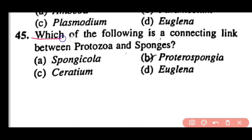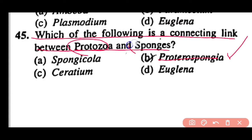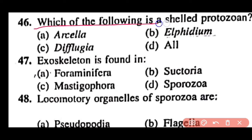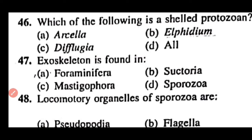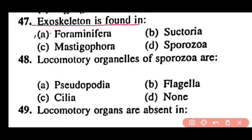Question 44: Which protozoan resembles the ancestral form from which plants and animals evolved — Amoeba, Paramecium, Plasmodium, or Euglena? Correct answer is option D. Euglena resembles the ancestral form from which plants and animals evolved. Question 45: Which is the connecting link between protozoa and sponges — Spongicola, Proterospongia, Serratia, or Euglena? Correct answer is option B. Proterospongia has characters of both protozoans and sponges. Question 46: Shelled protozoans include Arcella, Difflugia, and Alphidium — all of these (option D). Question 47: Exoskeleton is found in Foraminifera; it is made of calcium carbonate (option A).